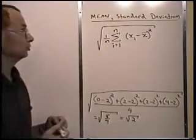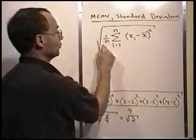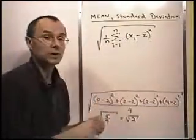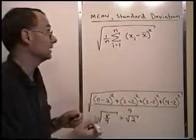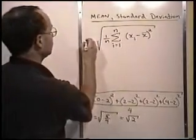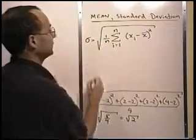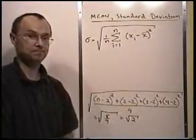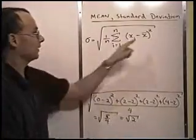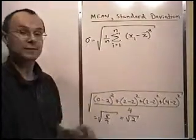Sometimes what they'll do is they'll bring the 1 over n inside here, but it really makes no difference. That's how we work out what the standard deviation is. And here's the little symbol for it. Looks like that. It's a little Greek letter. And that represents standard deviation. So there we have it. We have the mean and the standard deviation.